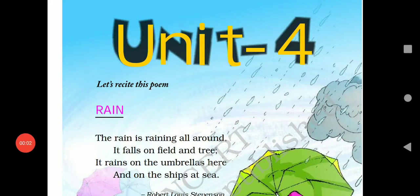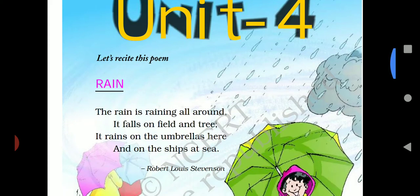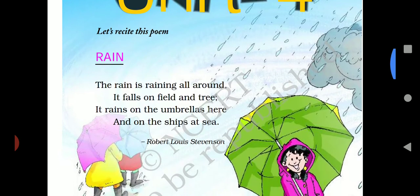Good morning, class 2. This is English Marigold, unit number 4 and chapter number 7. So children, this poem is called Rain. Let's start.